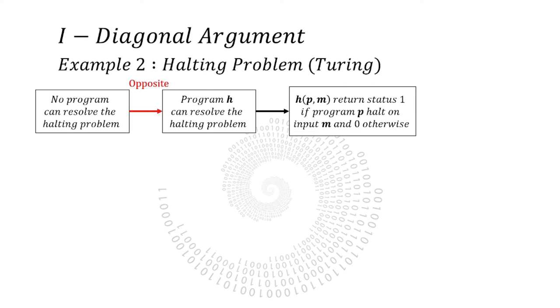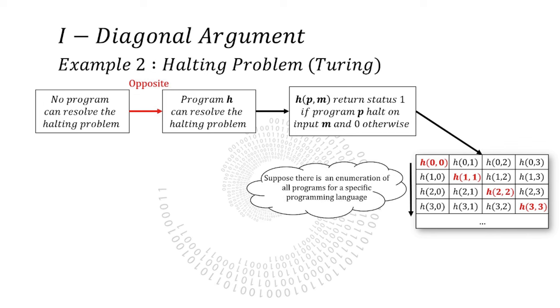And H has two inputs. A program P and an argument M applied on that program. H returns 1 if P applied on M is halting. And 0 if it doesn't halt. And we assume that programs are sequences of symbols defined on a finite alphabet. We do not prove this here but the set of programs is countable. So there is an enumeration of all programs. Let's P and M be actually the index of the programs and arguments it encodes. We can then display the table of H evaluated on all programs and arguments.